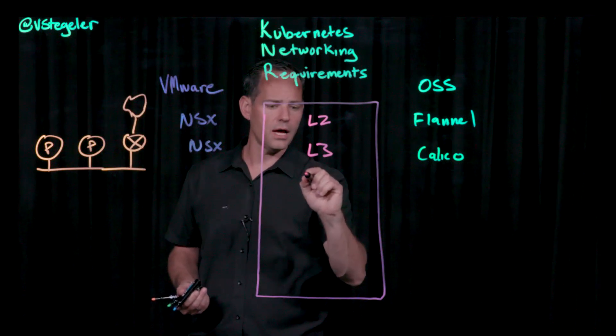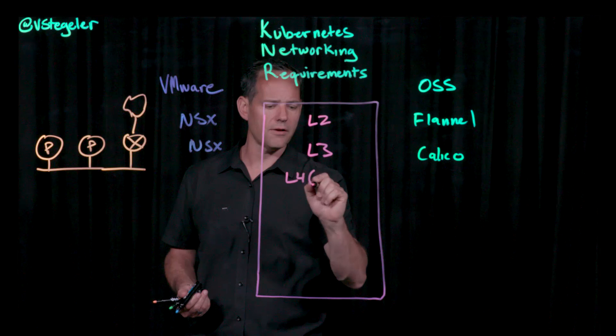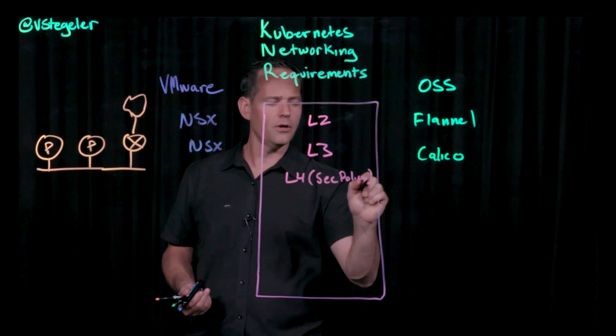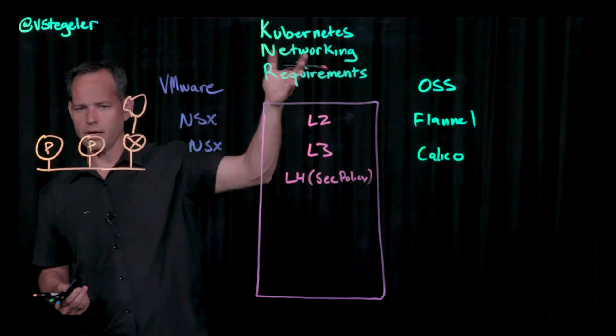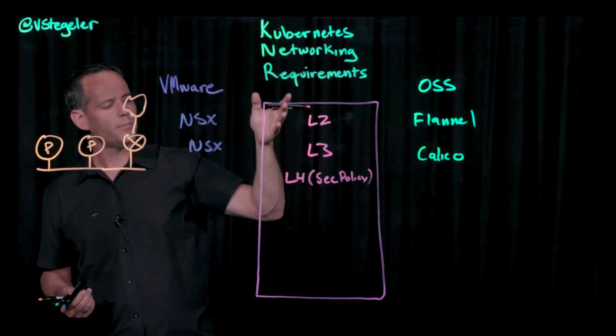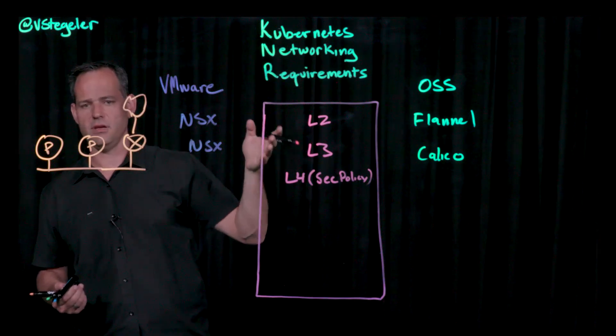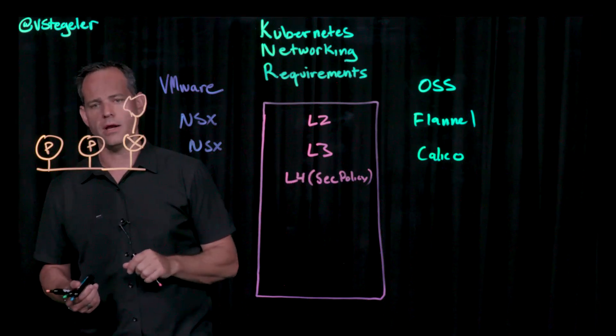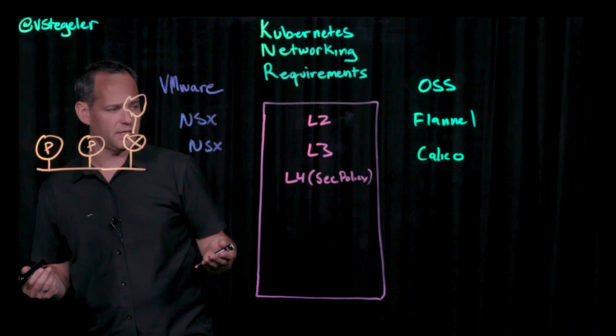Next up, we're going to do layer four. And by layer four, I'm really talking about the security policy. In Kubernetes, of course, it gives you these great constructs to provide the connectivity for the workloads themselves. Namely, security policy is one. But it doesn't provide you an implementation detail.